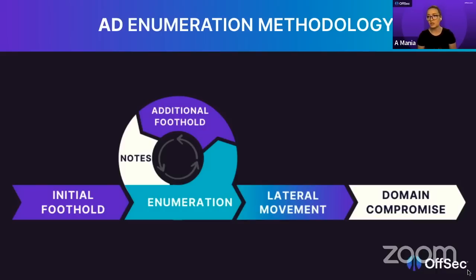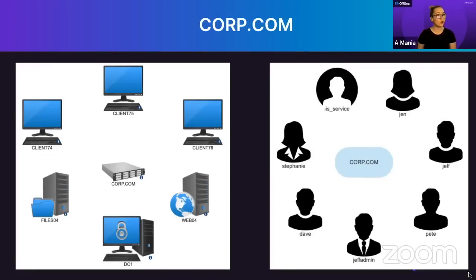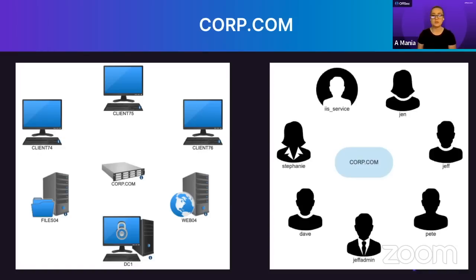Whatever your methodology, get in the habit of documenting everything you do — you don't know when that information will be valuable. The circular diagram with three arrows shows this isn't a one-time process; you repeat it over and over to move through an AD environment. Once you have more information you can start lateral movement, and you may need to repeat the cycle before achieving domain compromise.